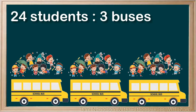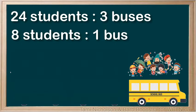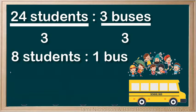Here we have 24 students riding in 3 buses. The unit rate of 24 students for every 3 buses is 8 students per bus. You could also find the unit rate by dividing the first term of the ratio by the second term.